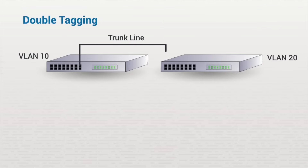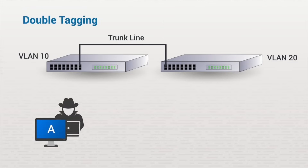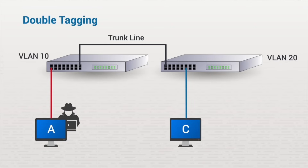Another method attackers use is called double tagging. This VLAN hopping technique is used when the attacker's computer is on one VLAN switch and the target computer is on a VLAN attached to a separate switch. In addition, the switches must be configured to use what's called native VLANs. When a packet is sent to a switch, it includes what's known as a VLAN tag, whose purpose is to indicate which switch should process the frame.